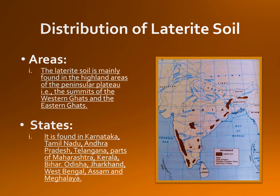Coffee color is used on the map to show areas with laterite soil. In India, laterite soil is widespread covering over 10% of the total geographical area — on the summits of the Western Ghats, Eastern Ghats, the Rajmahal hills, Vindhyas, Satpuras and Malwa Plateau. Southern parts of Maharashtra, parts of Karnataka, Andhra Pradesh, West Bengal, Orissa, Jharkhand, Kerala, Assam and Meghalaya. You can take a snapshot for reference for map pointing.